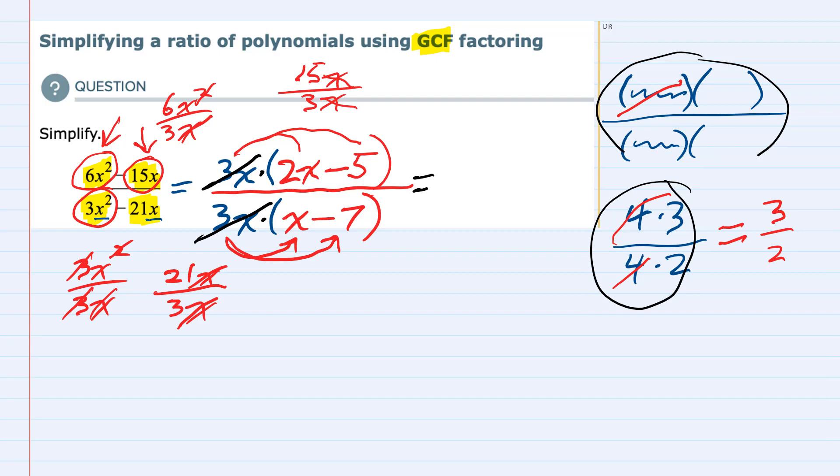That means I'm only left with the 2x minus 5 in the numerator and in the denominator x minus 7. The other terms have canceled, so this is our simplified fraction.